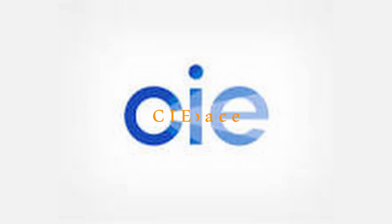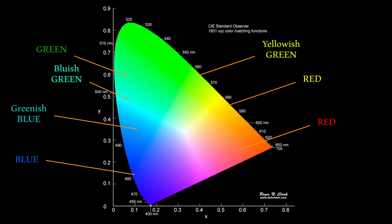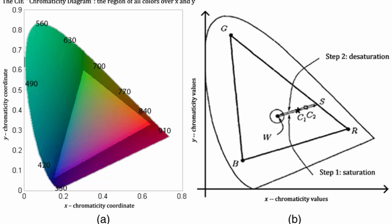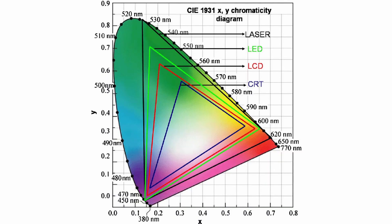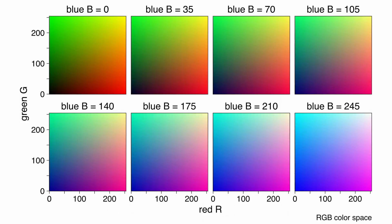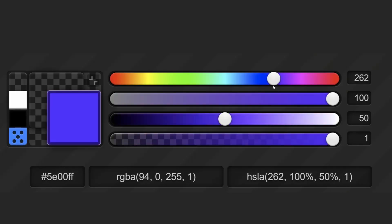In 1931, CIE, or the International Commission of Illumination, continued this research, and the result was a mathematical system for quantifying all colors perceivable by the human eye. This chart is also called the Horseshoe, as you can see. By definition, color gamut is the range of colors within the visible color space that devices such as a monitor or projector can reproduce.